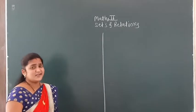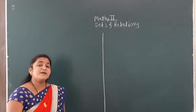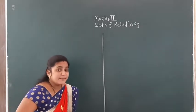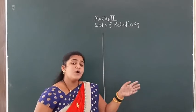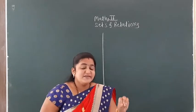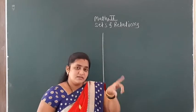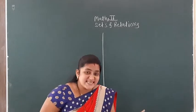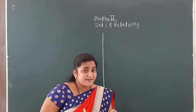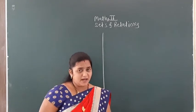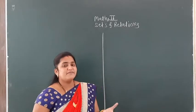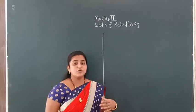The first method is the roster method, and the second method is the set builder method. The roster method always lists all possible elements within curly brackets, with elements separated by commas.